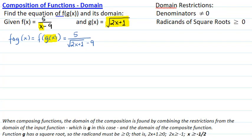When composing functions, the domain of the composition is found by combining the restrictions from the domain of the input function, which is g in this case, and the domain of the composite function f circle g of x. Function g has a square root and the radicand must be greater than or equal to 0. That means 2x+1 ≥ 0, so 2x ≥ -1, giving x ≥ -1/2.